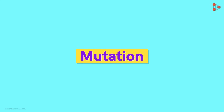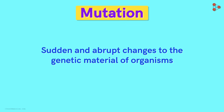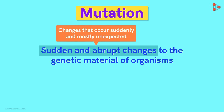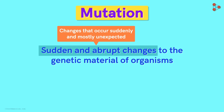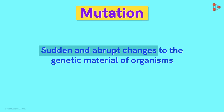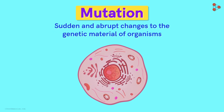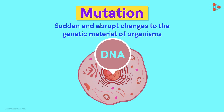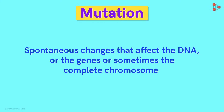Mutation, in simple words, is defined as sudden and abrupt changes to the genetic material of organisms. Sudden and abrupt changes means a few changes that occur suddenly and are mostly unexpected. These changes are usually random and disruptive to the normal functioning of the cell. These changes occur in the genetic material of the organism — that means in the DNA. As a result, either the gene or the complete chromosome gets affected.